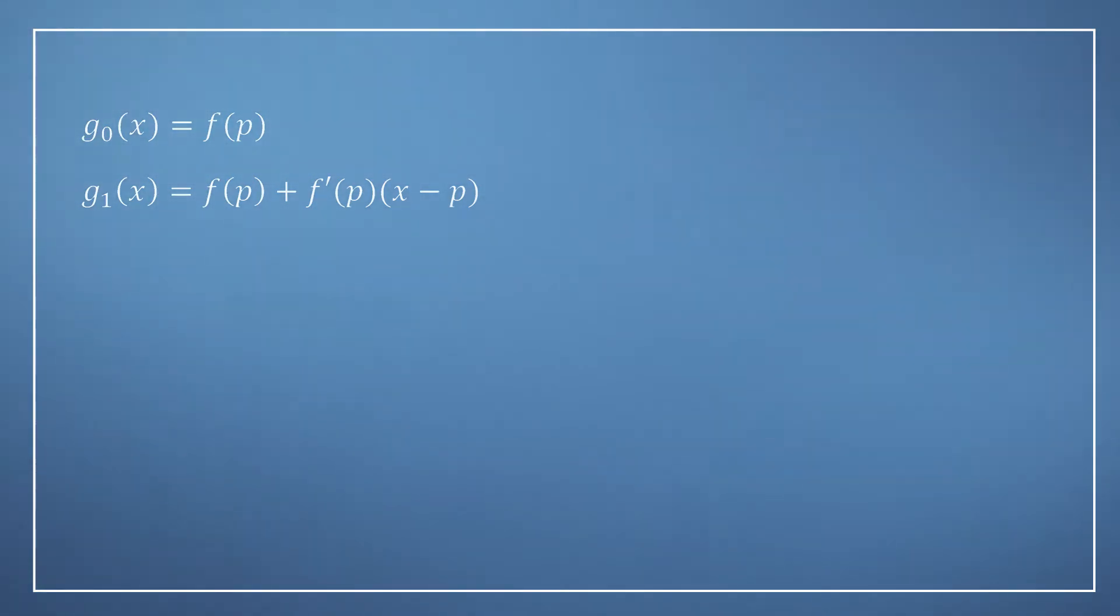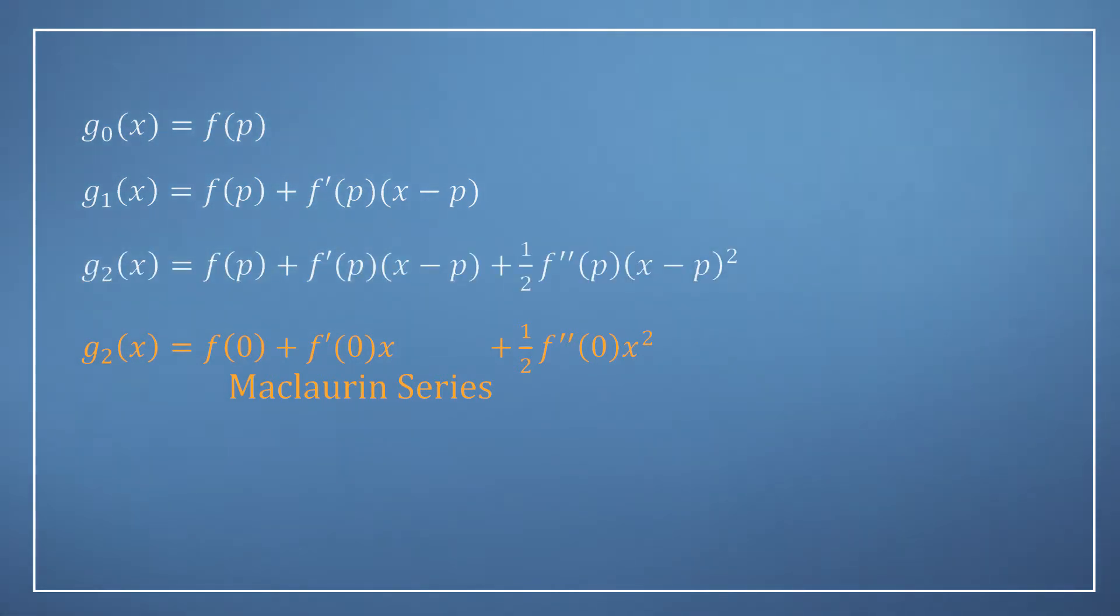Thinking back to the Maclaurin series from the previous video, all we need to do to convert to Taylor series is use the second derivative at p rather than zero, and also replace x with (x - p). But notice that the factor of one-half still remains.